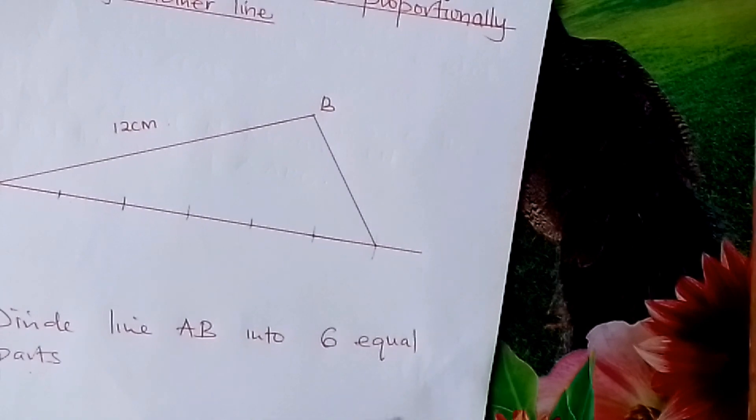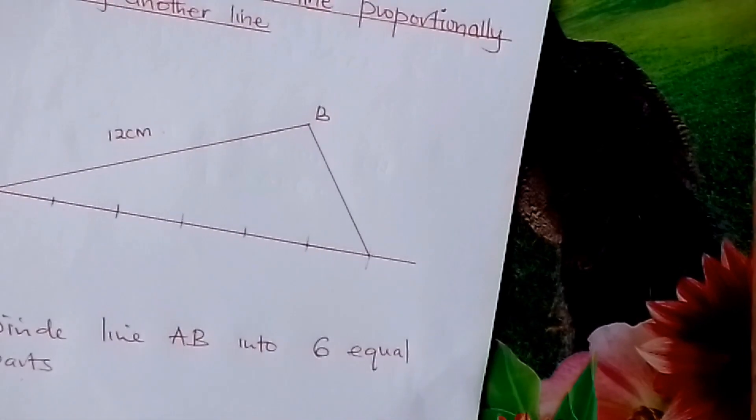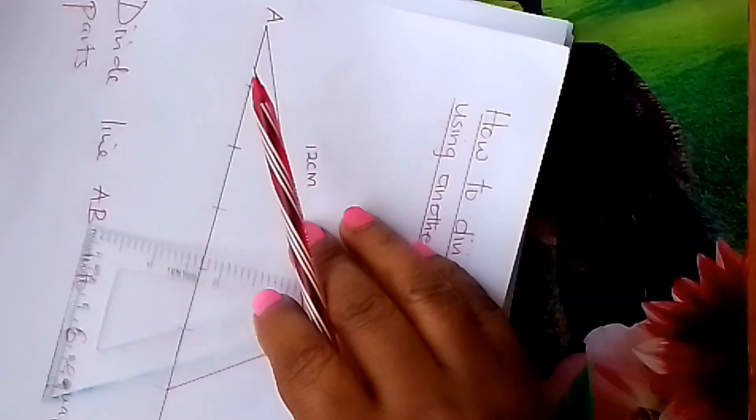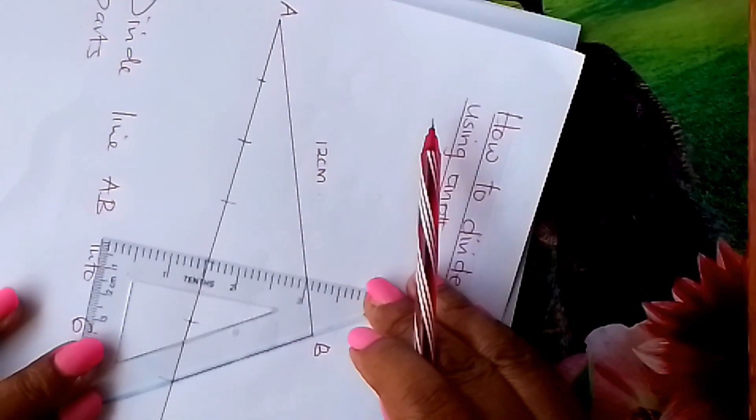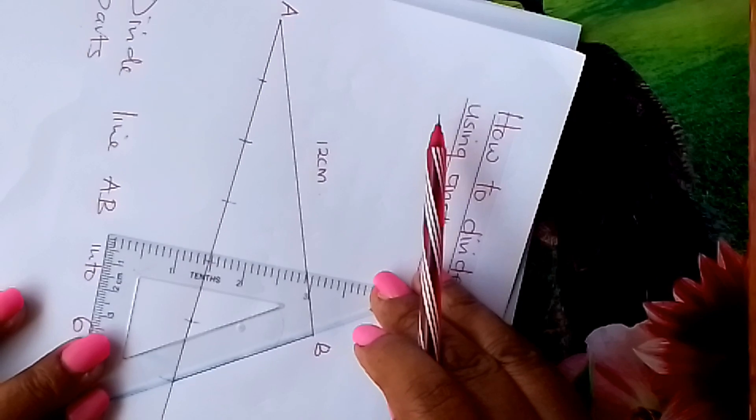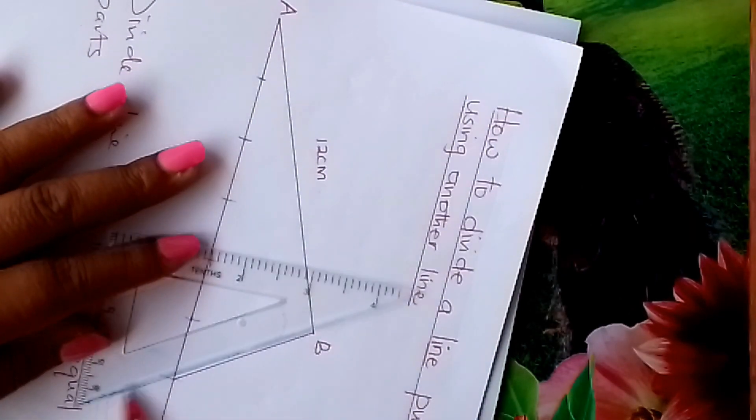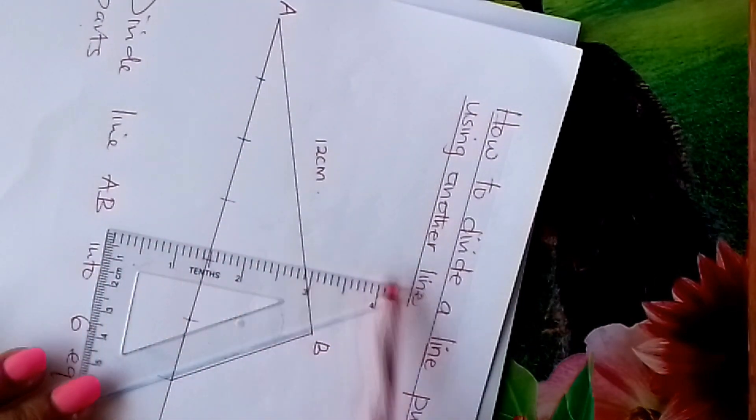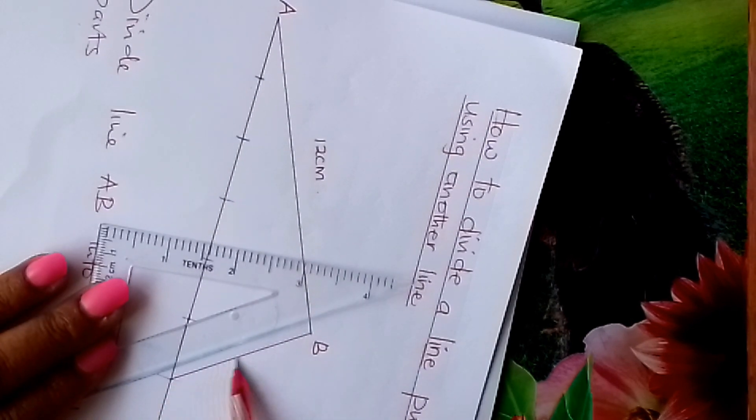After joining it like that, you take your set square. You come and fix it this way. I hope you can see it. The hypotenuse of our set square here lies on this line.